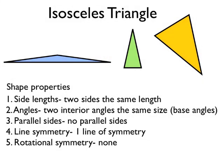So to recap: an isosceles triangle has two sides which are the same length. There are two interior angles that are the same size — we call these the base angles. There are no parallel sides. It has one line of symmetry and no rotational symmetry.